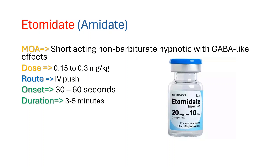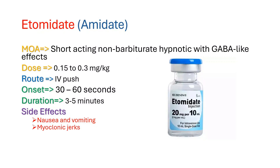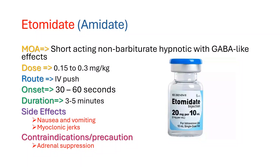Since etomidate maintains hemodynamic stability and does not induce hypotension, it is preferred over other induction agents in patients with cardiovascular disease. Side effects include nausea and vomiting, and myoclonic jerks, which can be mistaken for seizures. Use caution in patients with adrenal insufficiency because etomidate can cause adrenal suppression for 12 to 24 hours after injection. The decrease in cortisol production is due to etomidate inhibiting 11-beta-hydroxylase, a key enzyme in cortisol synthesis.